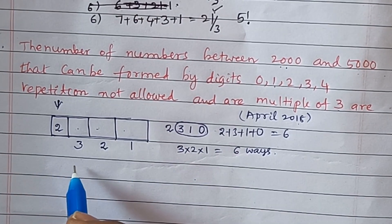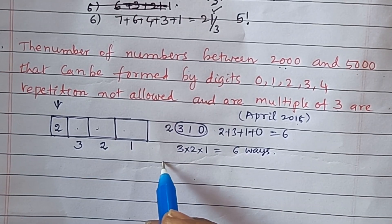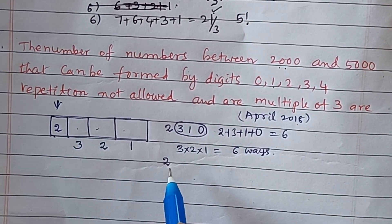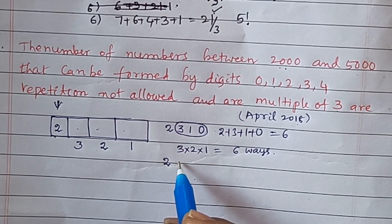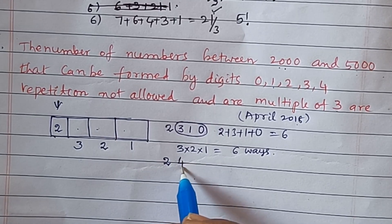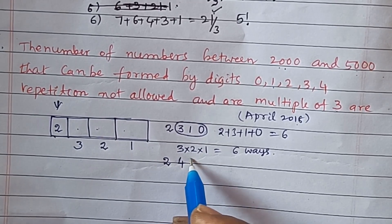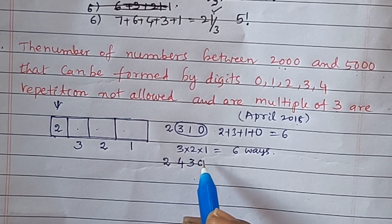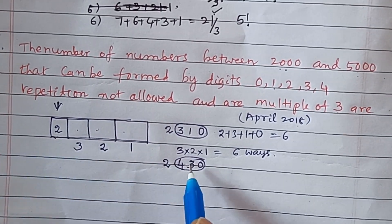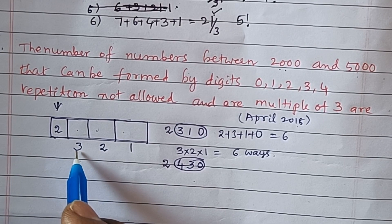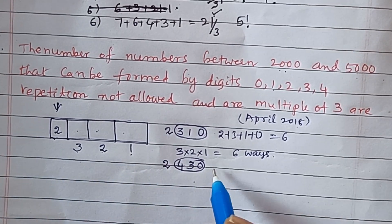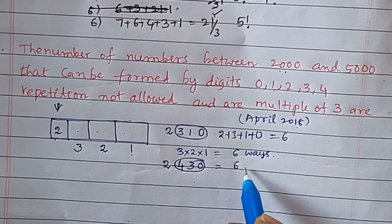For the next pattern, we fix two digits again. We fill one position in 3 ways, another in 2 ways, and the last in 1 way. This also gives 6 ways for this case.